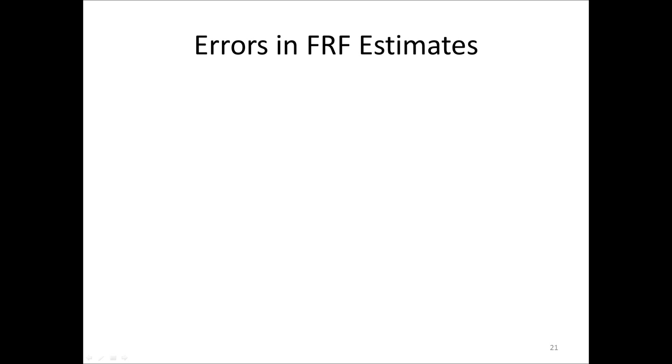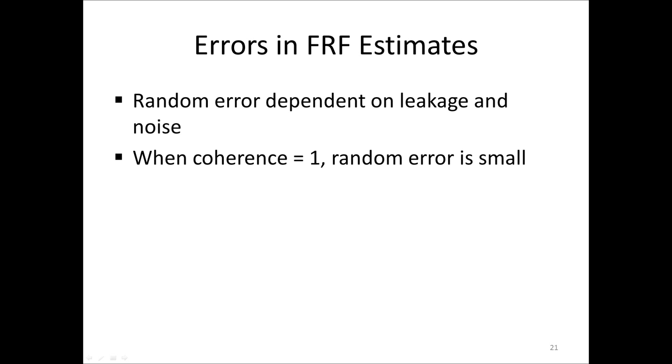Finally, a few words about the random errors in FRF estimates. This error is relatively complicated in detail and is dependent on two things: the leakage and the amount of extraneous noise in the measurement. However, when the coherence equals unity, the random error is very small, as only the error caused by leakage remains.